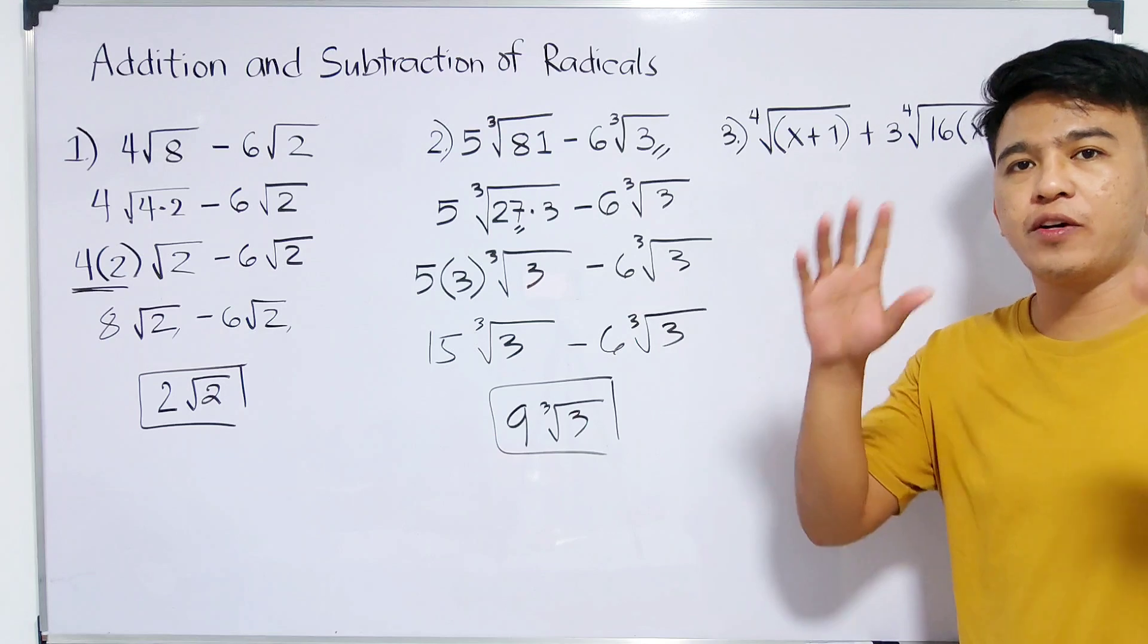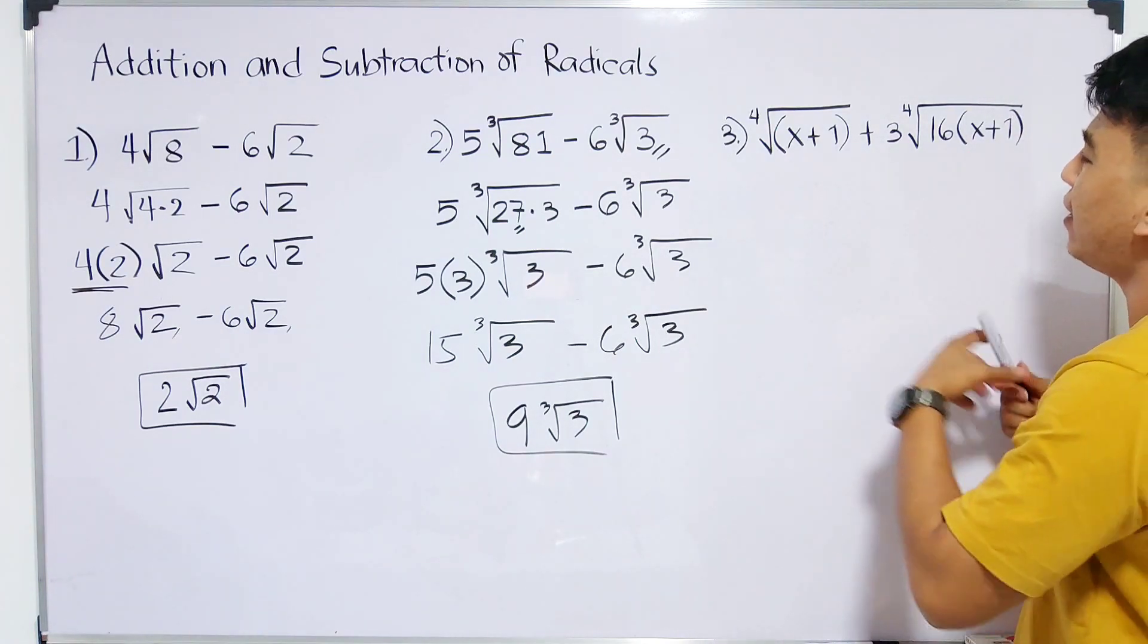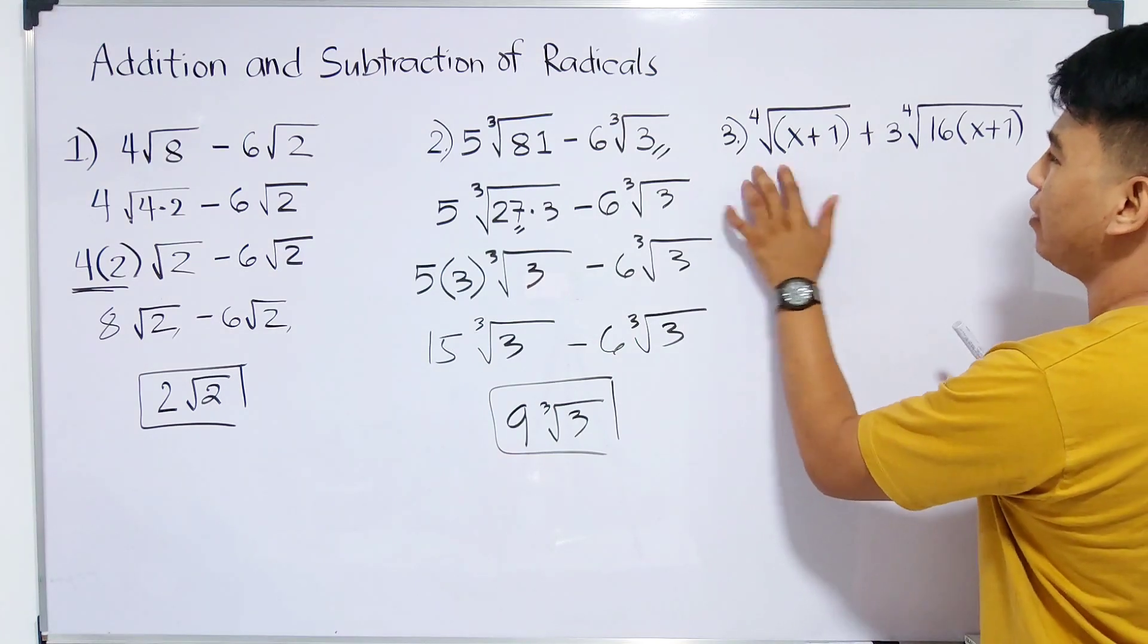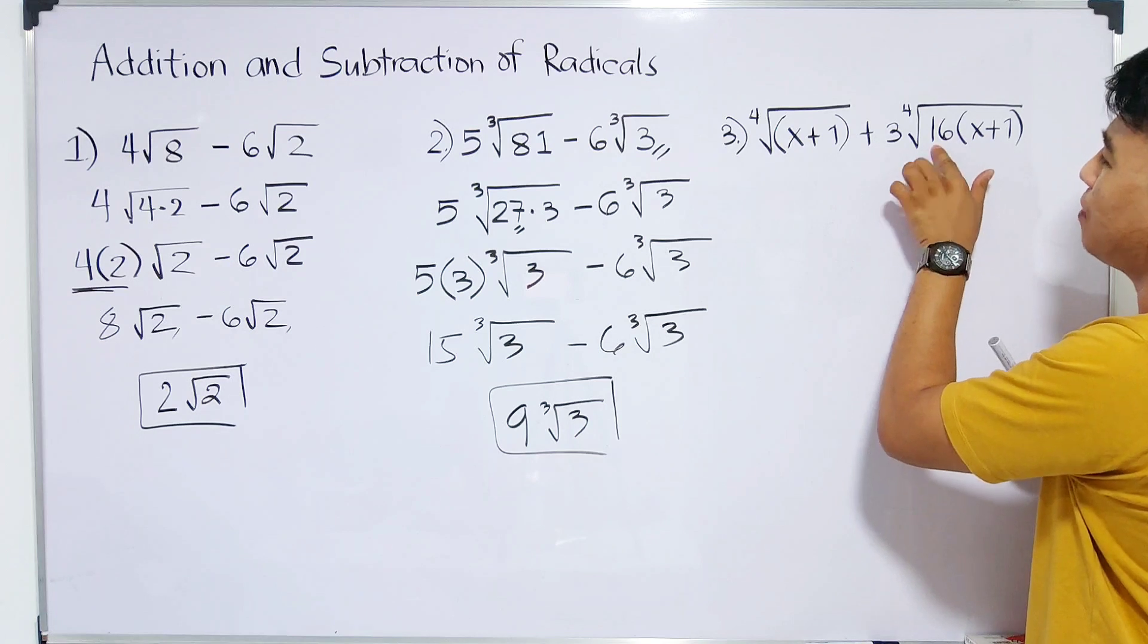So our question now is how we are going to add these radical expressions. Don't worry guys, it's easy. So here, we won't touch this. And focus on our second term. Our 16 is a perfect 4th root.